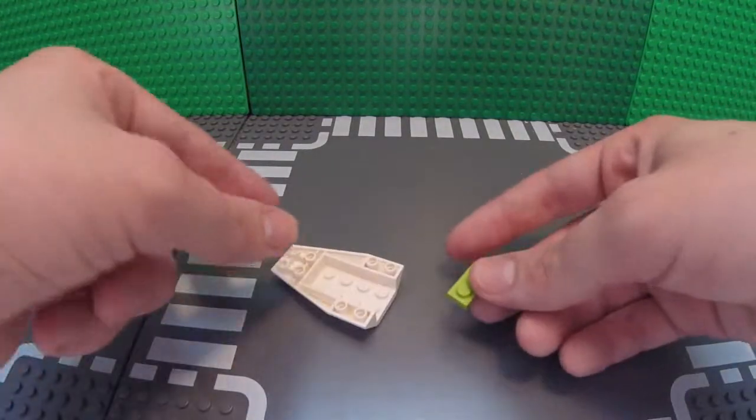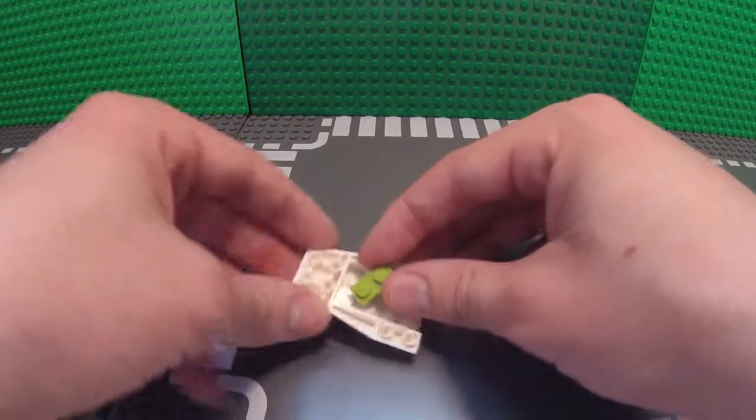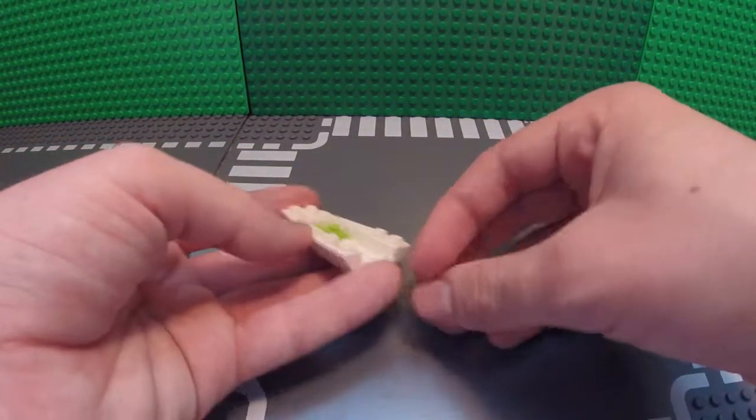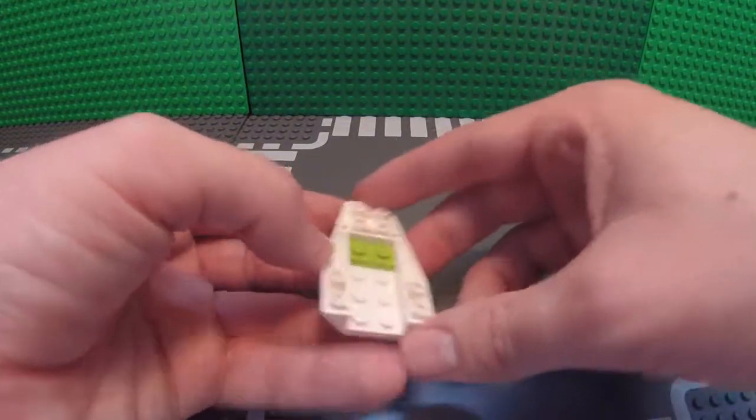To start off, take one of your 1x2 plates and place it all the way up at the front of the lower section of the 4x6 hole piece.